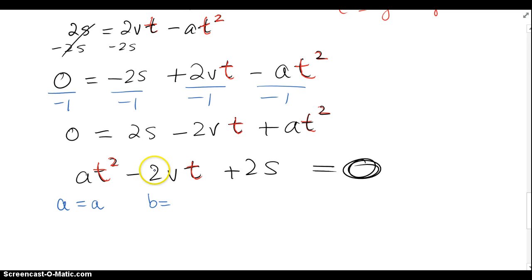b is this coefficient, minus 2v, and c is that last constant, which in this case is 2s.